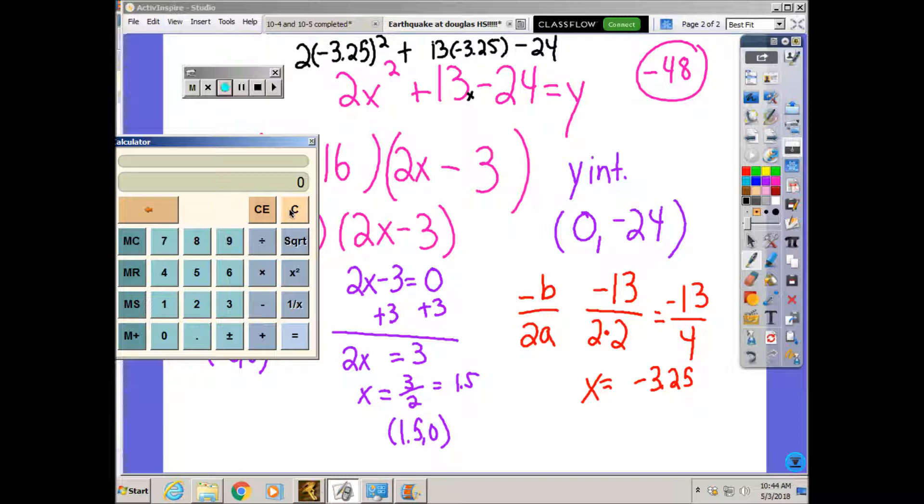Now 3.25 squared, so negative 3.25 squared is 10.5625. Multiply that by 2.